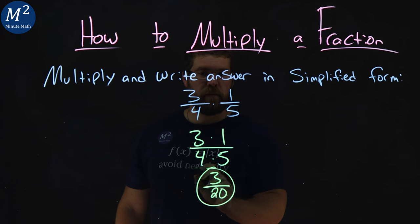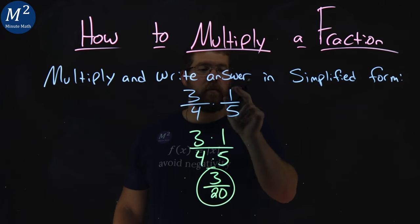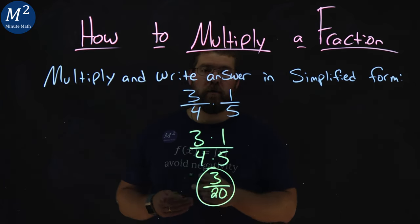And there we have it. 3 fourths times 1 fifth equals 3 over 20.